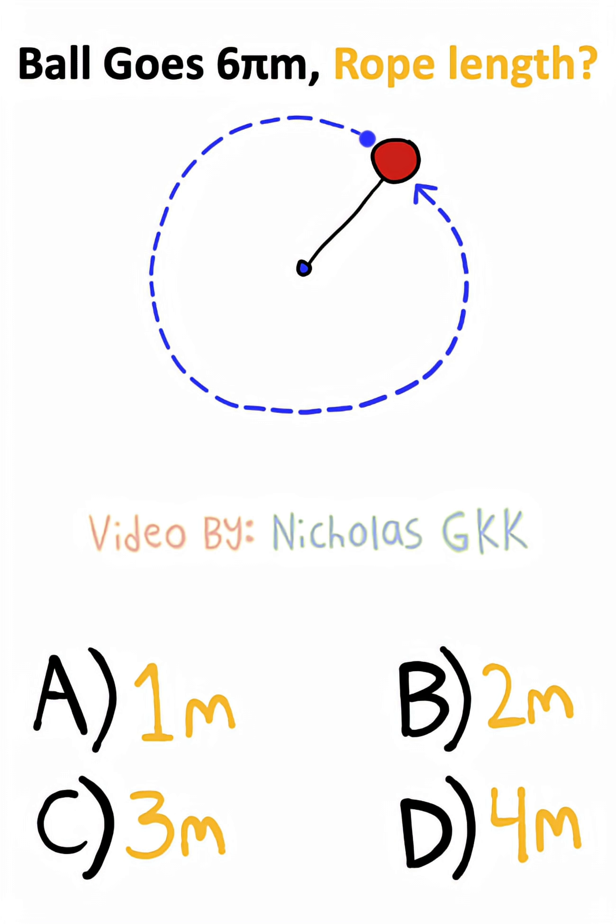Problem 2, we have a ball that travels in a circular motion. Now the circumference of a circle is 2 pi times radius, and the circumference is just 6 pi.